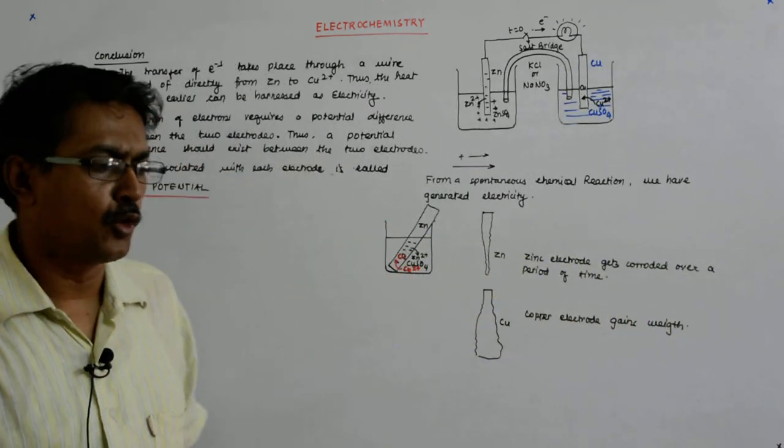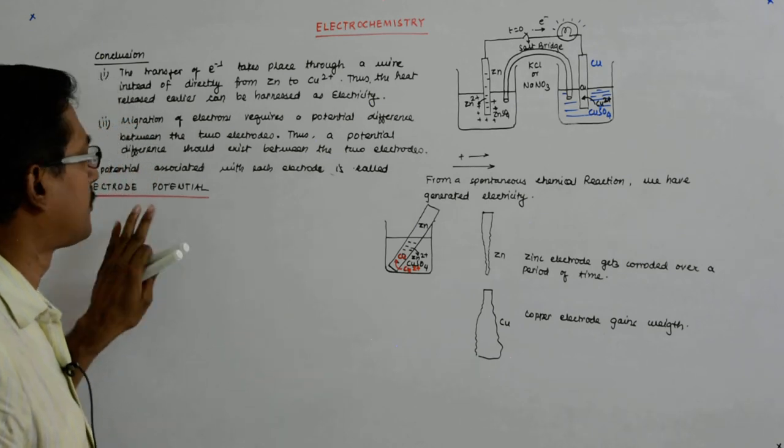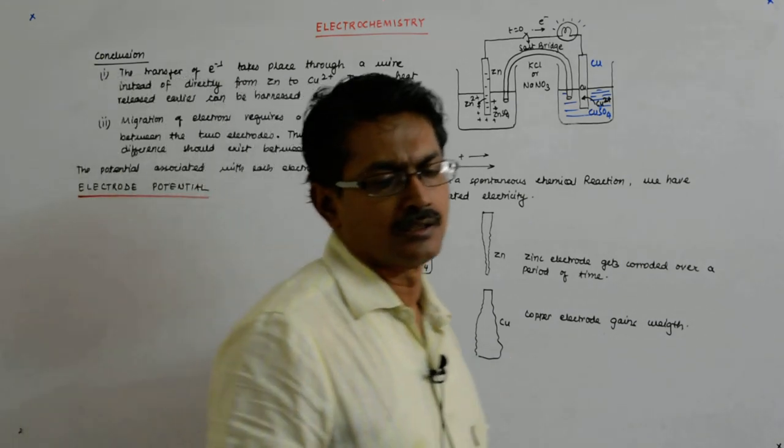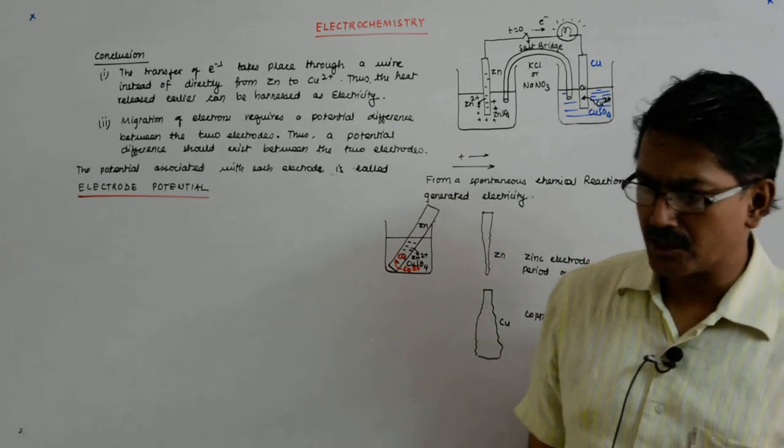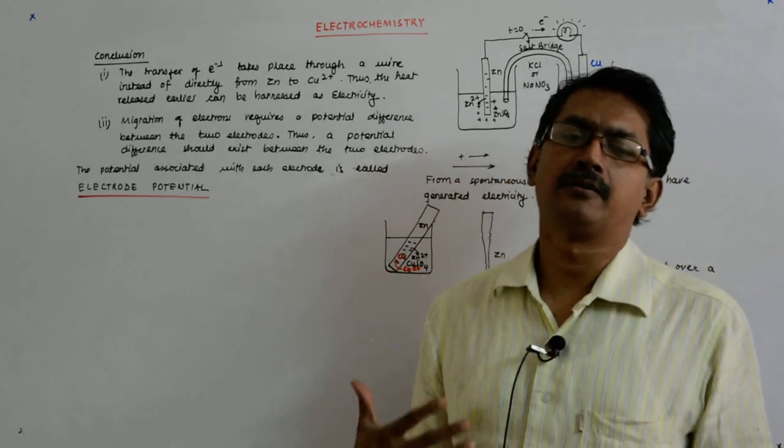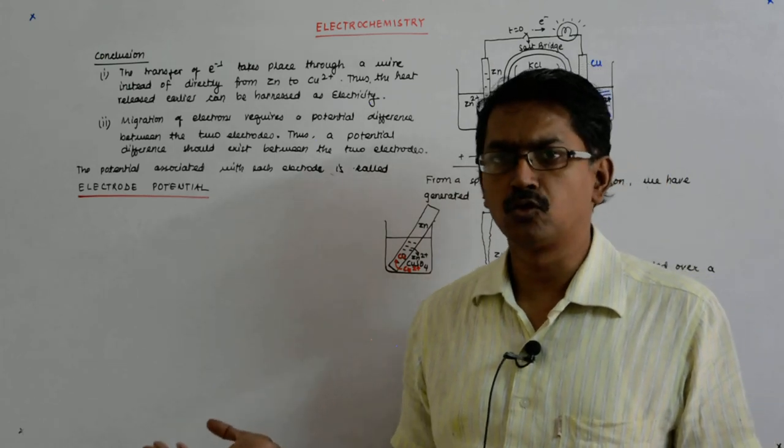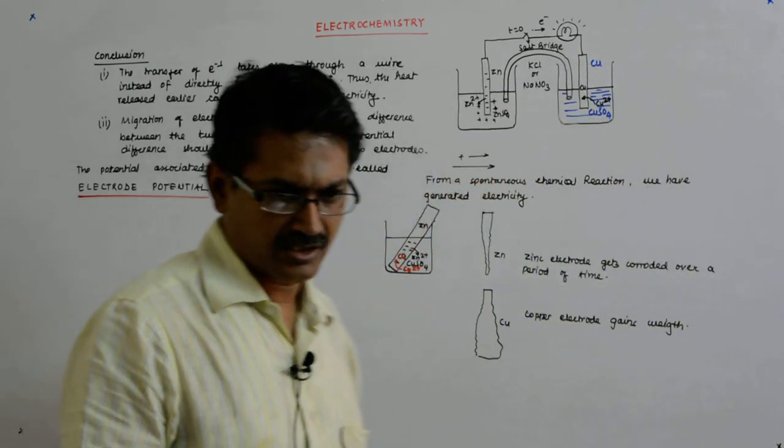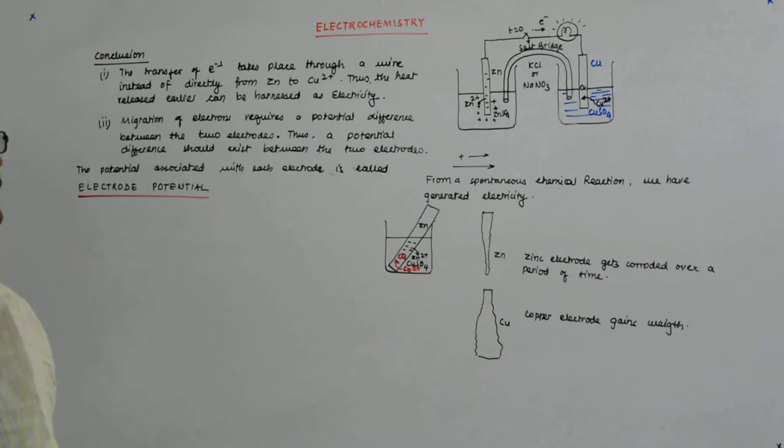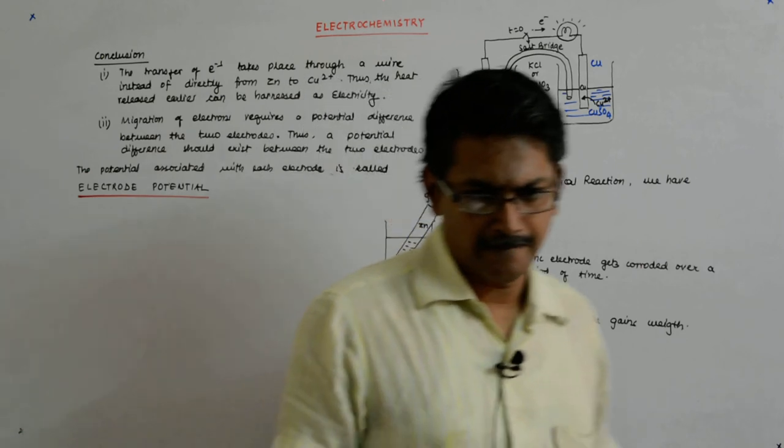Now, we will go into more details of this electrode potential and what will be the potential. What will it depend on? What changes can I do to what parameters to change it? And ultimately, tap all that information into building an efficient cell.